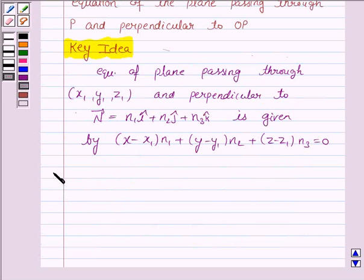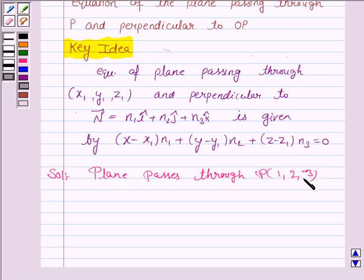Let us now move on to the solution. We are given that the plane passes through the point P given by (1, 2, -3), and the plane is perpendicular to OP.